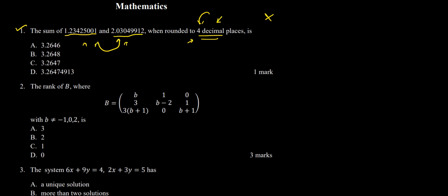What we need to do is first sum the two numbers, then round the result. So adding 1.23425001 and 2.03049912, we perform simple addition: the result comes out to 3.26474913.